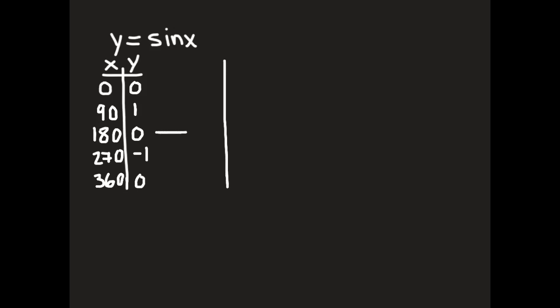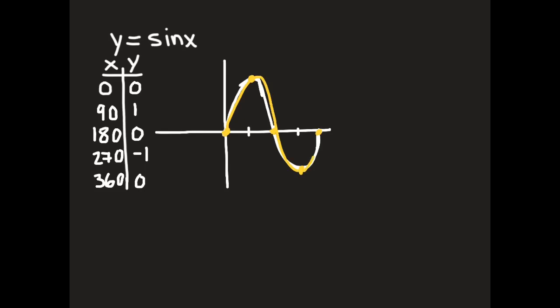If we go to graph y equals sine x, it starts at 0 — it is a curve, not straight lines. It starts in the middle, goes up to the highest point, then back to the middle, goes to the lowest point, and then back to the middle. Those are the most important points of any sinusoidal function: where the middle is, and the highest and lowest points. This is one cycle of y equals sine x.